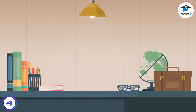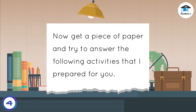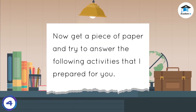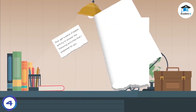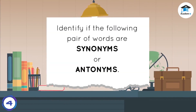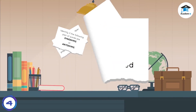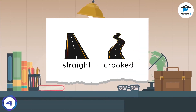Now get a piece of paper and try to answer the following activities that I prepared for you. Identify if the following pair of words are synonyms or antonyms. First pair: Straight – Crooked.